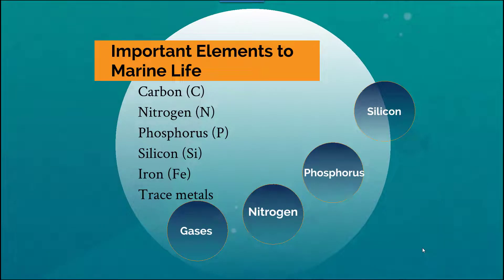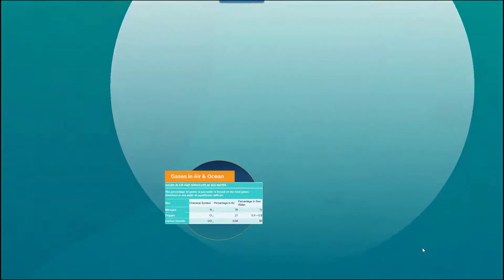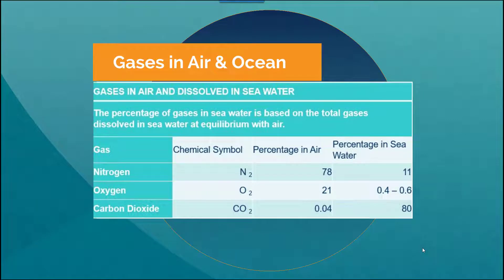Marine life is dependent on several different elements including carbon, nitrogen, phosphorus, silicon, iron, and trace metals. Gases exist in both the air and in the ocean; however, in the ocean they are typically dissolved in the water to a different extent than their contribution in the atmosphere.